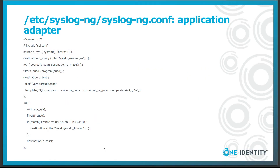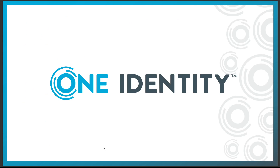You might have seen this example configuration a few times before if you followed my tutorial series. This is a good example of application adapters — you do not see any parser declarations in the configuration, but you can see working with the results of message parsing. In this case, name-value pairs are parsed from syslog messages. If you have any questions or comments, leave a comment on YouTube or reach out to me on Twitter or Mastodon.